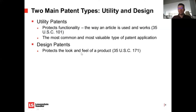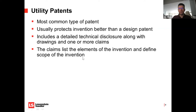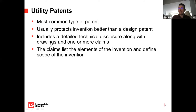Utility patents are the most common type of patent. They usually protect an invention better than a design patent because a design patent can't protect functionality, and design patents are generally easy to design around — all you have to do is change the way it looks a little bit. For a utility patent, it has to include a detailed technical disclosure and generally includes drawings. A design patent, on the other hand, is almost exclusively drawings with very little text. Both types of applications have to have at least one claim, which lists the elements of the invention and defines the scope.